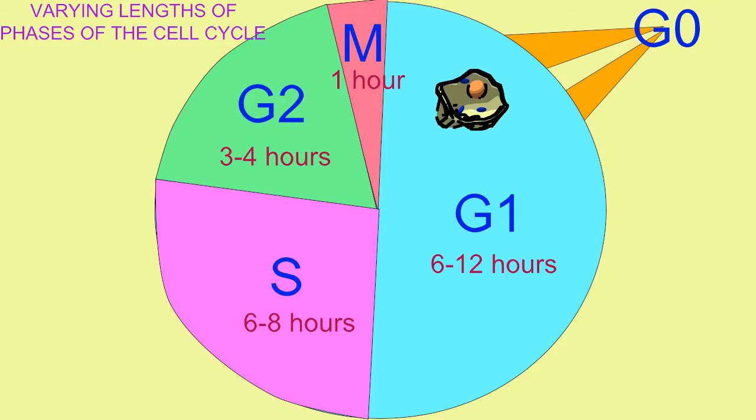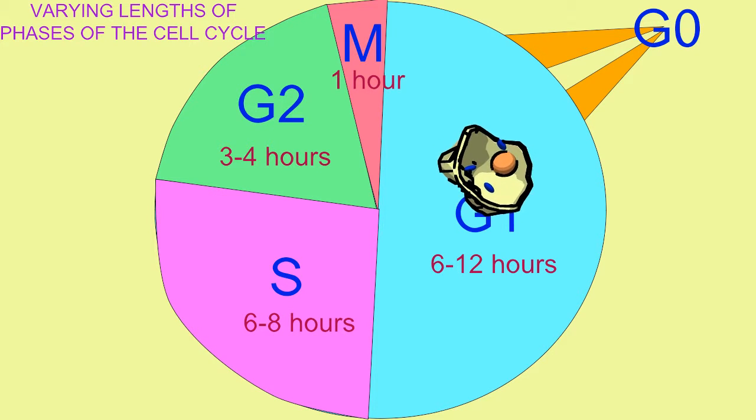The amount of time that a cell may spend in each of the stages of the cell cycle can vary widely, especially with differences in cell type and at different stages of development.